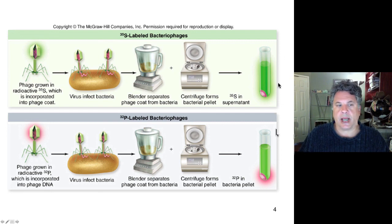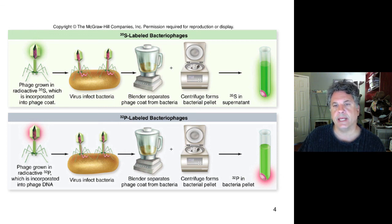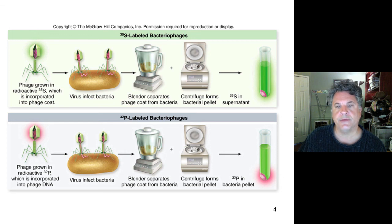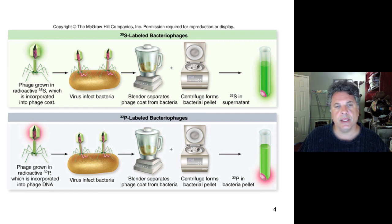This put the nail in the coffin of the idea that proteins could be the genetic material and gave very strong support to the notion that DNA was in fact the genetic material. Given that, a race soon ensued between several labs in England that were very interested in finding out what the structure of DNA was in cells — the in vivo structure of DNA. Certain features of DNA structure were known but the actual structure in cells was unknown. In the next part of this lecture, we'll discuss the race to discover the structure of DNA and enter into a detailed description of DNA structure.